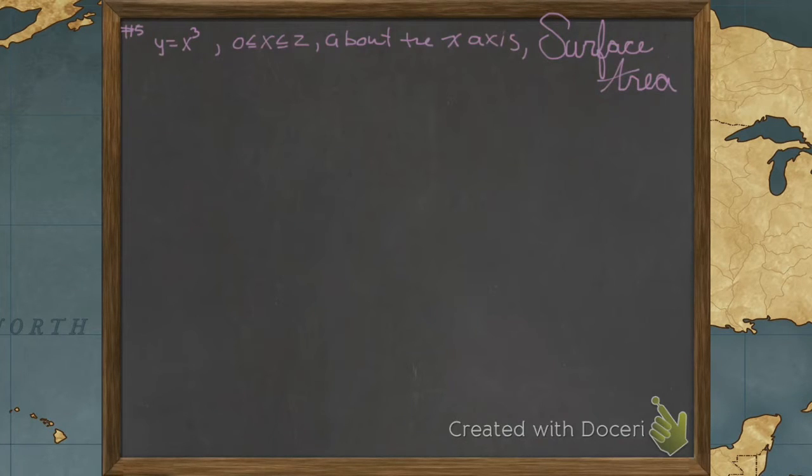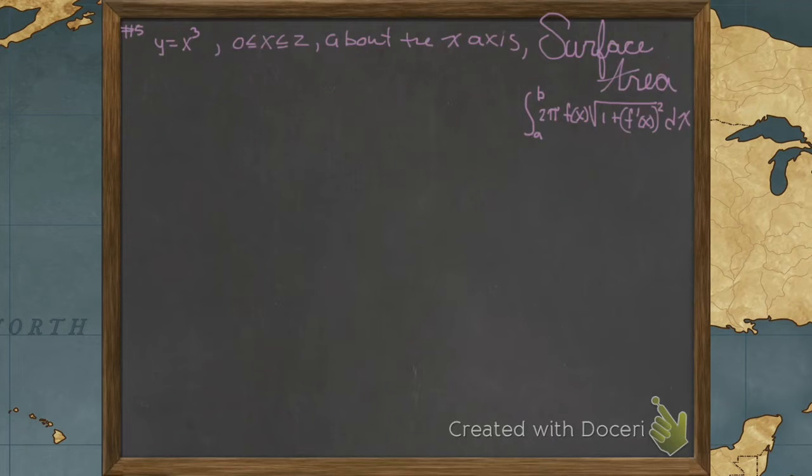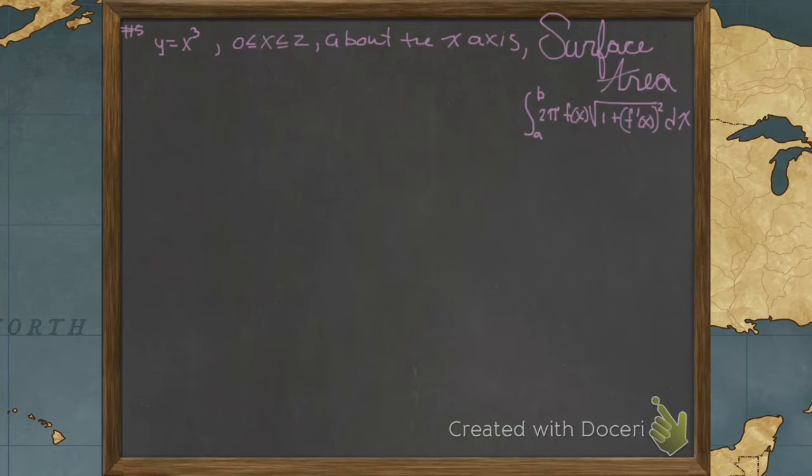We're looking for the surface area, so we need our form. Our form is the integral from a to b, 2 pi f times the arc length. That's the circumference times the arc length, and then we're going to integrate it.